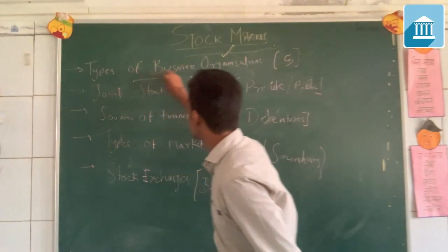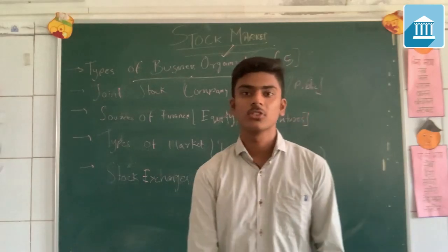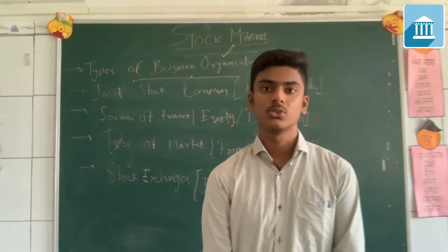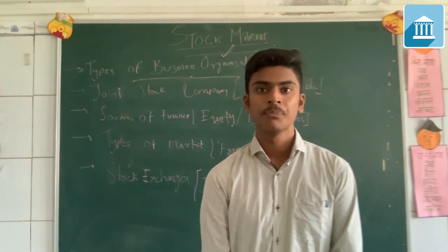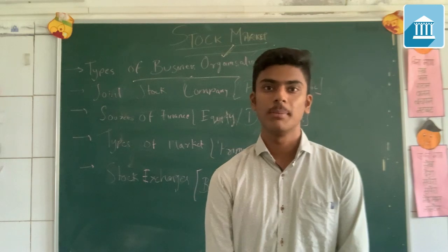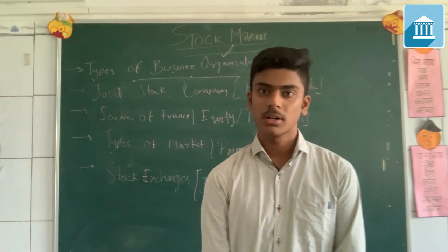First of all, let me clarify that there are mainly five types of business organizations. They are sole proprietorship, partnership, joint Hindu family business, cooperative society, and joint stock company.